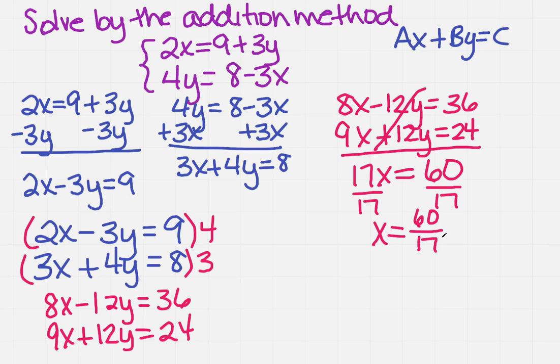That's okay. That is x, so now we need to find y. And in order to do that, we need to substitute that value back into one of our equations. I think the top one looks kind of cool. So I'm going to do 2 times 60 over 17 equals 9 plus 3y.